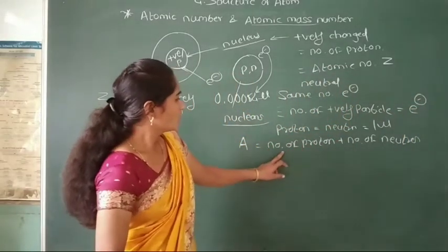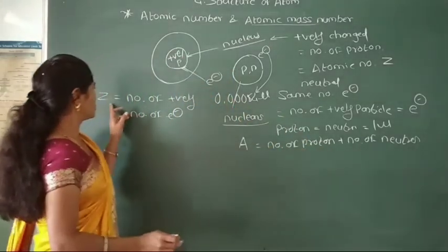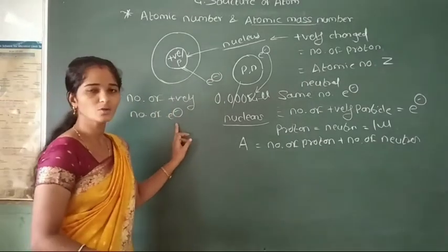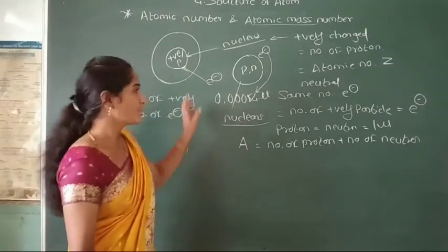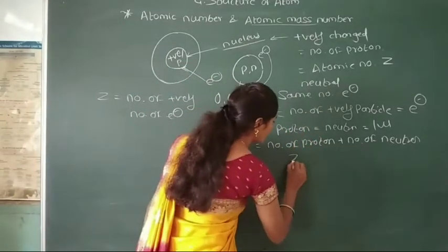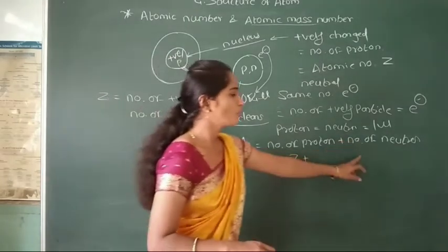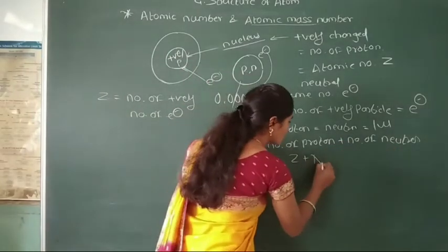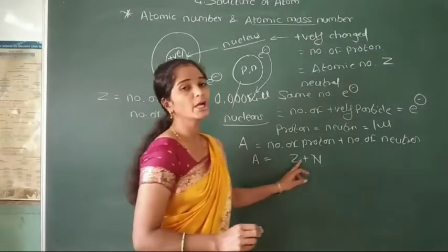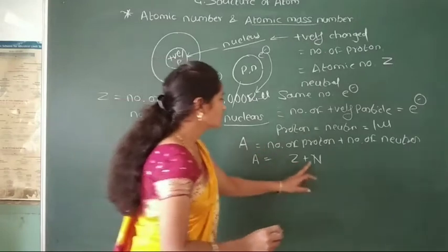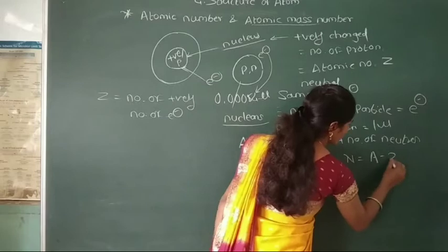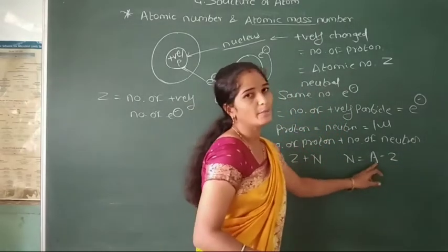Here, the number of protons is represented by the symbol Z (atomic number), meaning the number of positively charged particles or number of protons present inside the nucleus. The number of neutrons is represented by the symbol N. That means atomic mass number A = Z + N. From this equation, the number of neutrons is calculated as N = A minus Z.